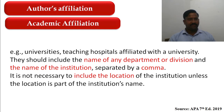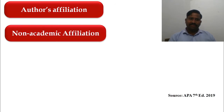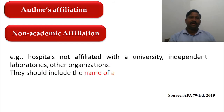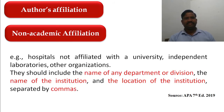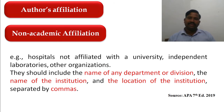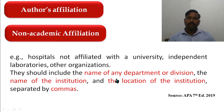For non-academic affiliation — such as hospitals not affiliated with a university, or independent laboratories — you should mention: name of the department or division, then name of the institution, then the location of the institution. Each element is separated with a comma. Unlike academic institutions, location must be mentioned here.